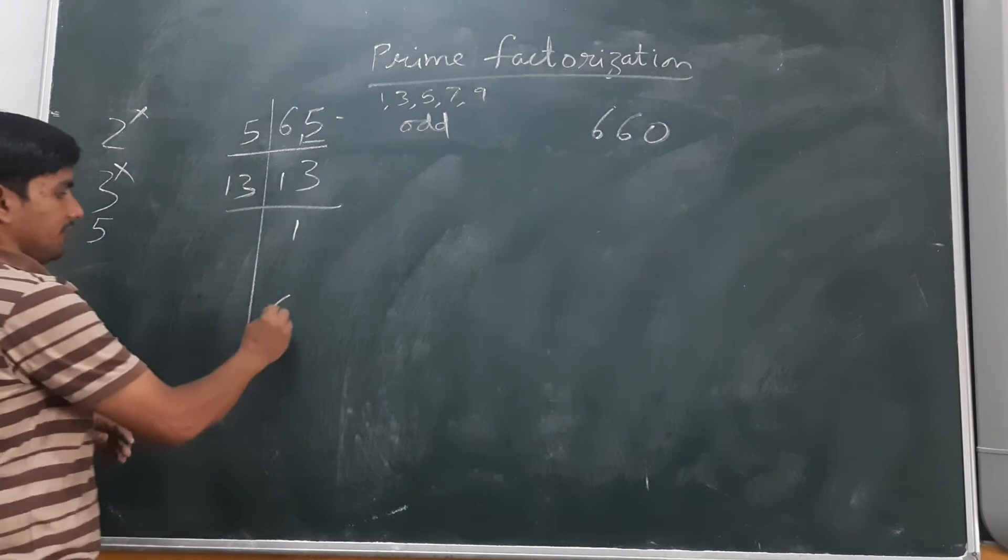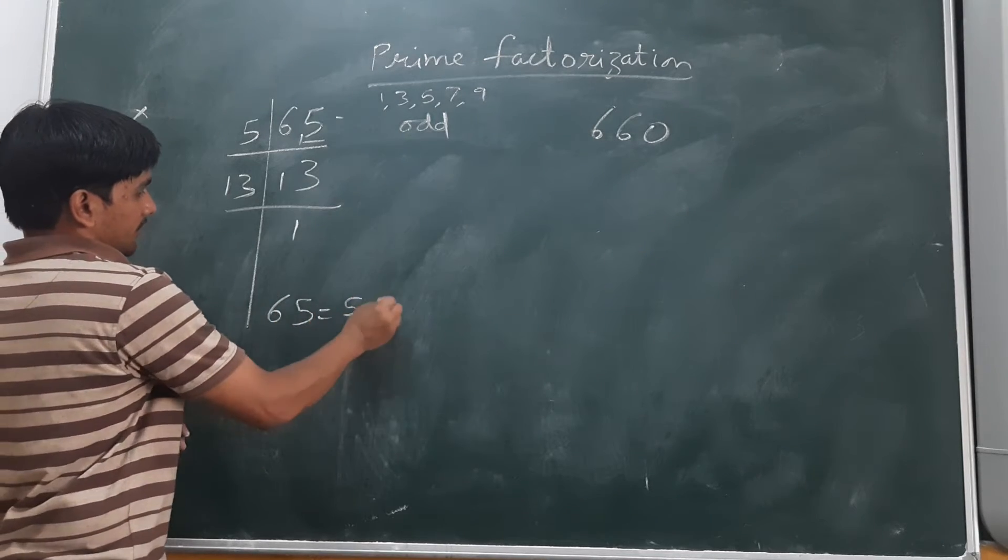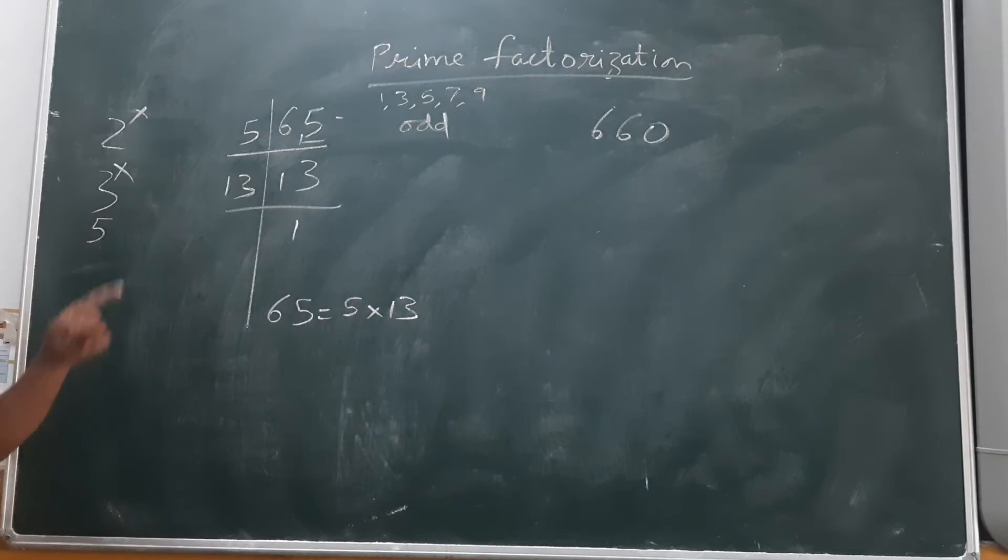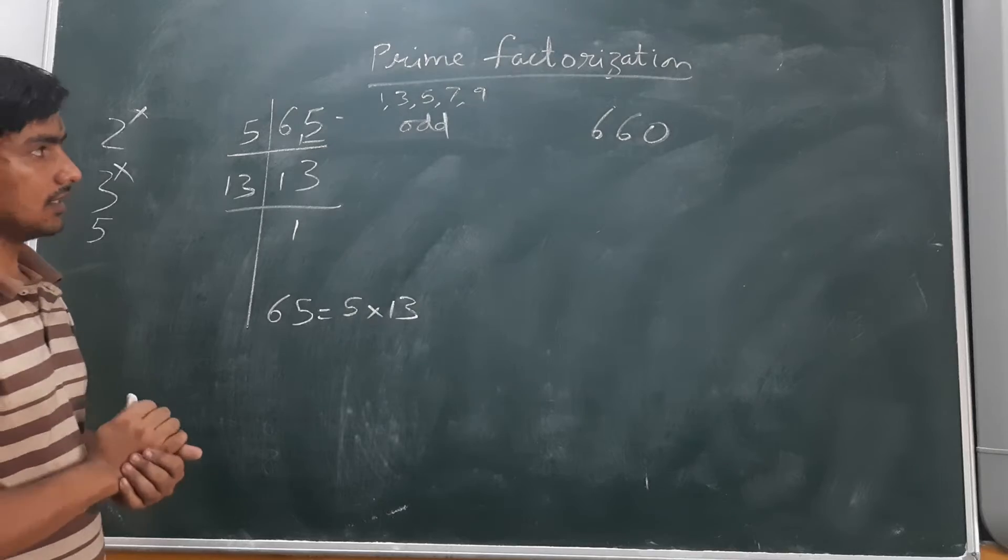So the prime factorization of 65 is 5 times 13. Next number we have 660.